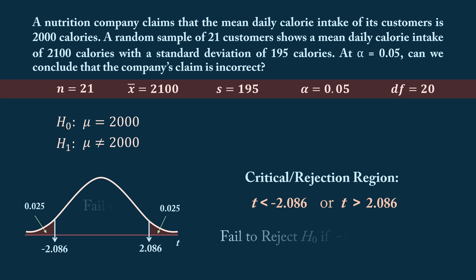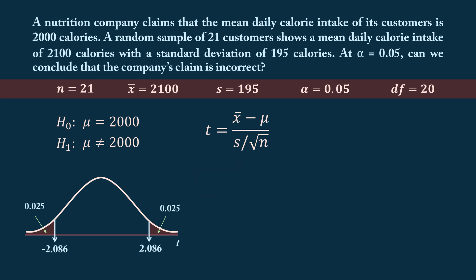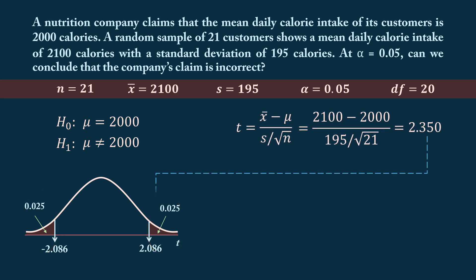Next, to calculate the t-statistic, we use the formula: x-bar minus mu, divided by the standard error of the mean. Here, x-bar is the sample mean of 2,100, mu is the hypothesized population mean of 2,000, s is the sample standard deviation of 195, and n is the sample size of 21. Evaluating this gives a t-observed of 2.350. Recall that the decision rule states we should reject the null hypothesis if the observed t falls into the critical regions. A calculated test statistic of 2.350 falls into the rejection region, as it is greater than 2.086.